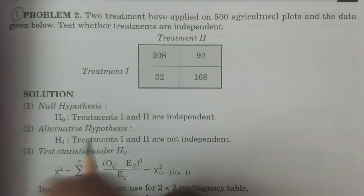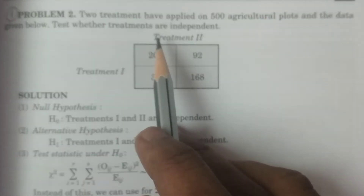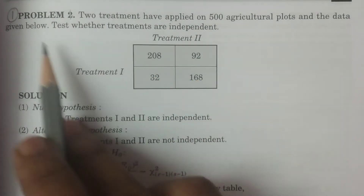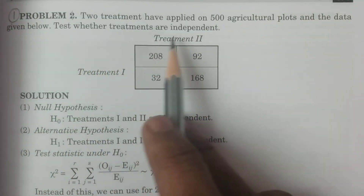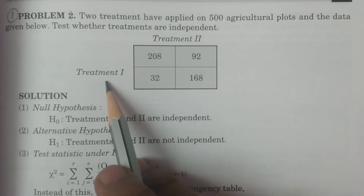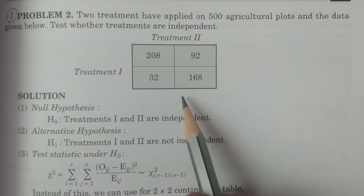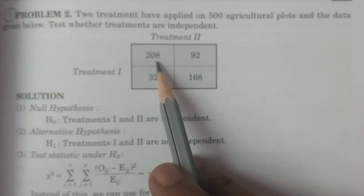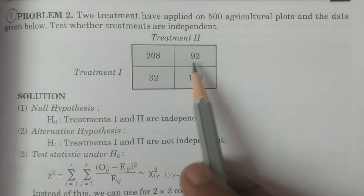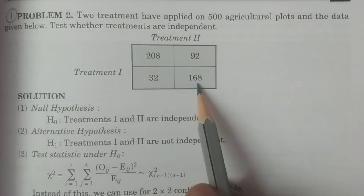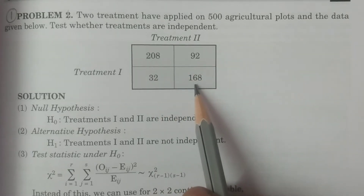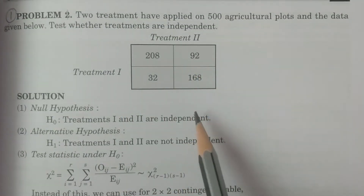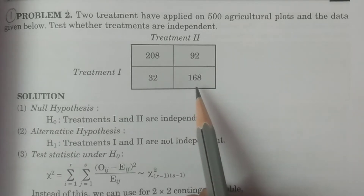Problem number one: two treatments have been applied on 500 agricultural plots and the data is given below. Test whether the treatments are independent. The data given is 208, 92, 32, and 168, according to treatment one and treatment two.